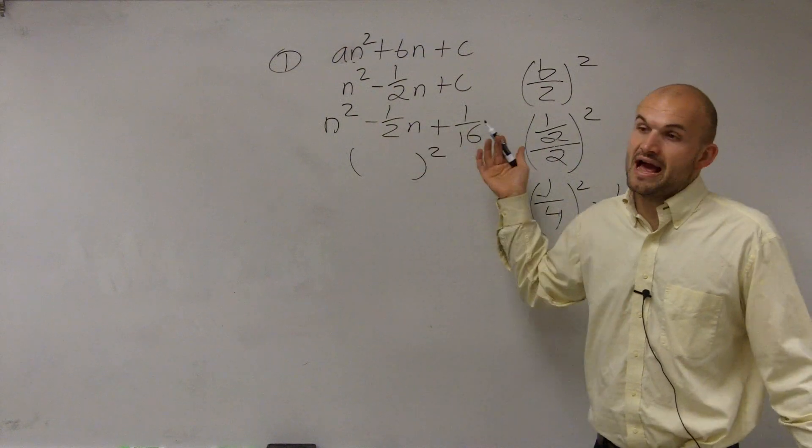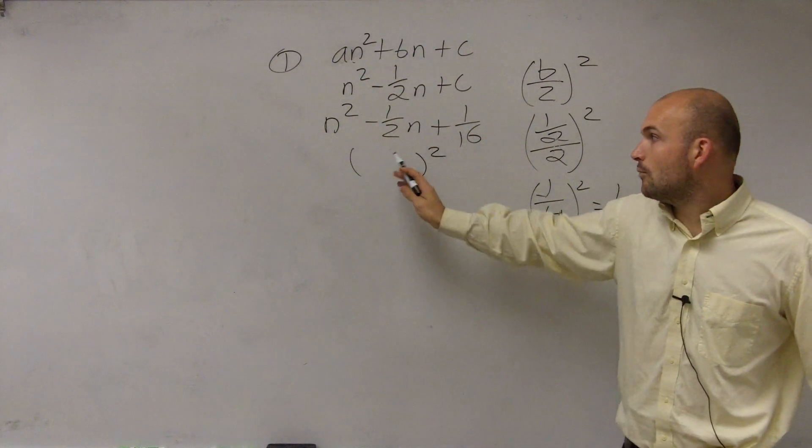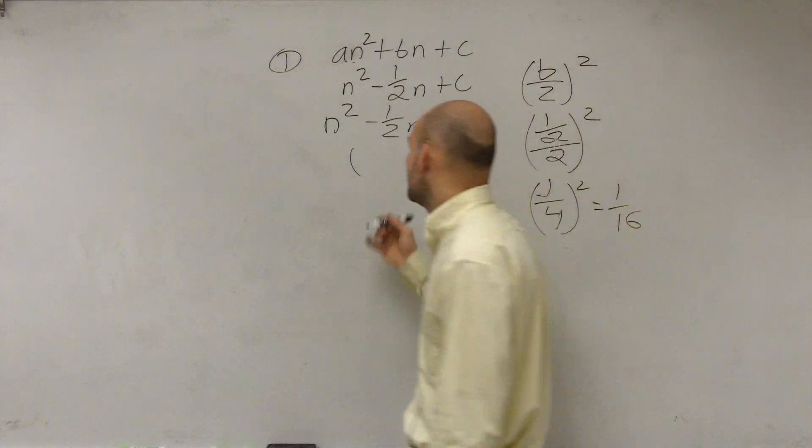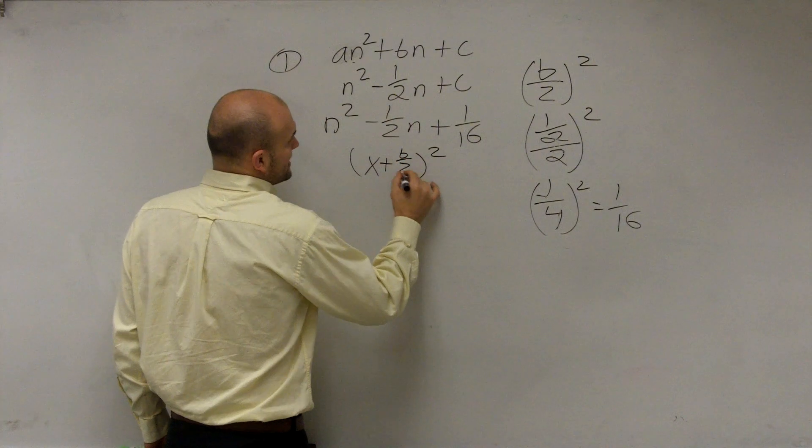Now my problem is, if I can't factor that in my head, then I need some way to devise how to figure out what this is as a binomial squared. The answer is, you can just do x plus b divided by 2.